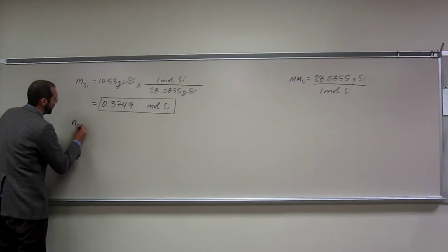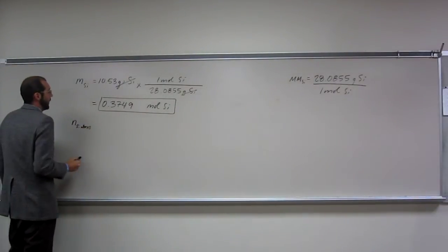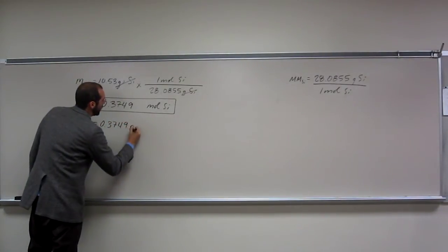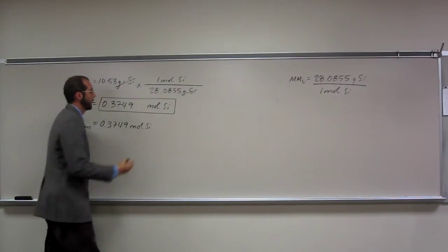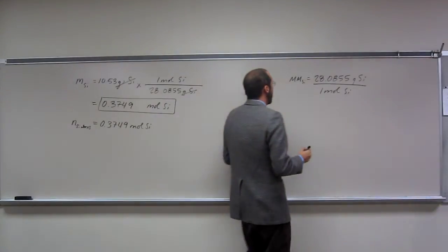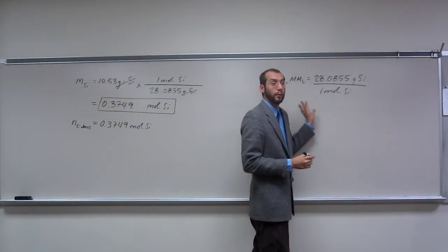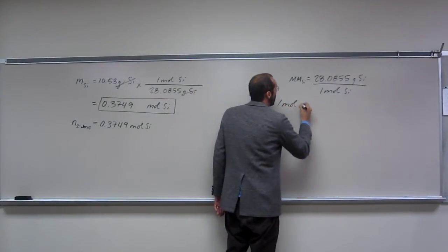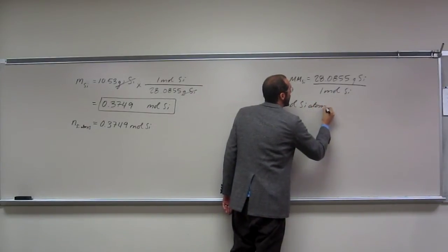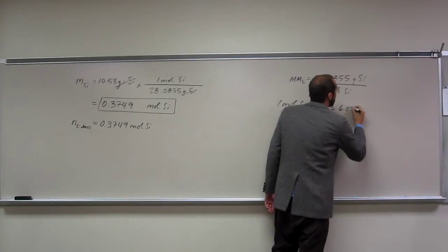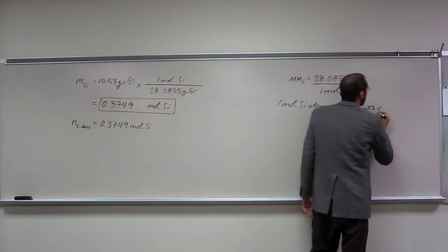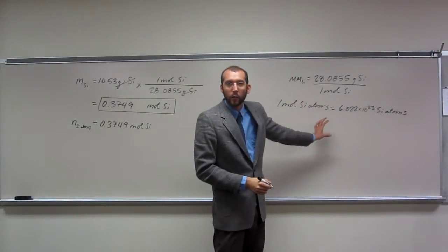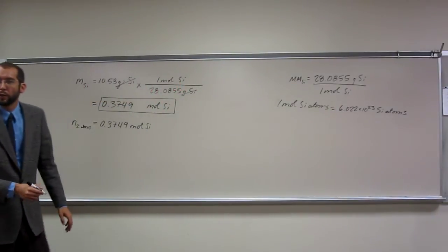So we'll say the number of silicon atoms that we have. And we know we have 0.3749 moles of silicon. And we hopefully remember, do you guys remember how many atoms are in one mole? So one mole of silicon atoms is 6.022 times 10 to the 23rd of silicon atoms. So this is just like saying one dozen silicon atoms is 12 silicon atoms. Is everybody okay with kind of that sort of analysis of it?